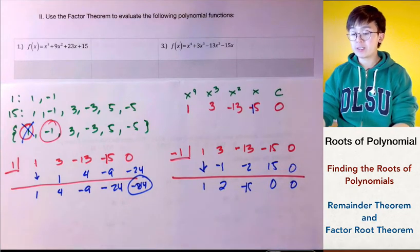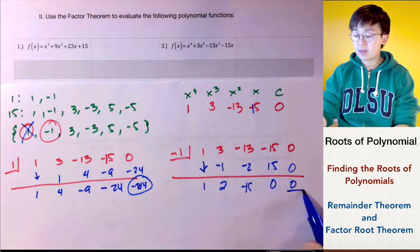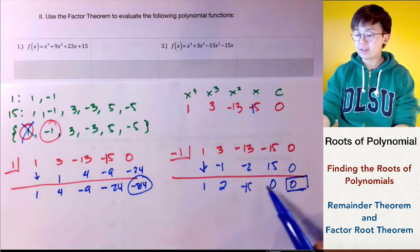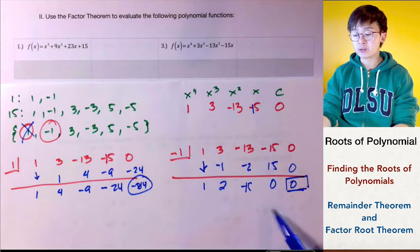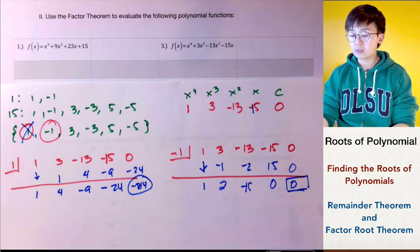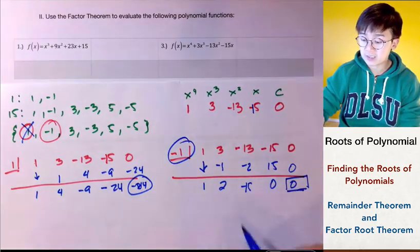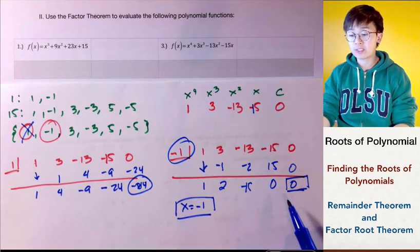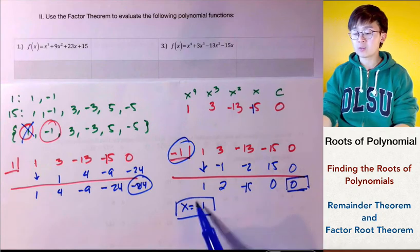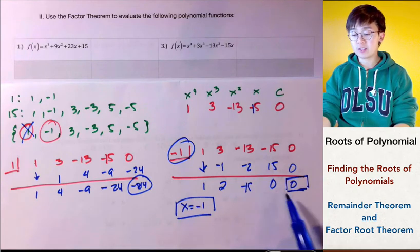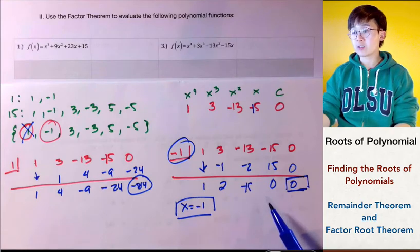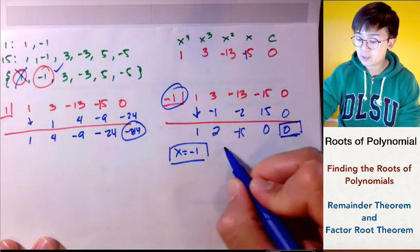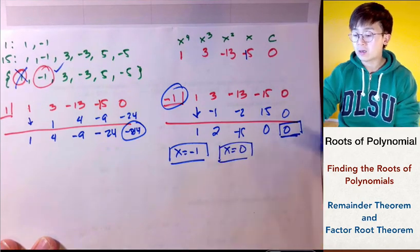Notice we have two zeros in our synthetic division result, which means x equals 0 is also one of the roots because of the constant 0 in our original polynomial. Our quotient turns into a quadratic function. So x equals negative 1 is one solution, and x equals 0 is another.